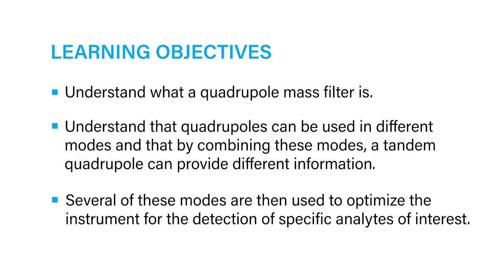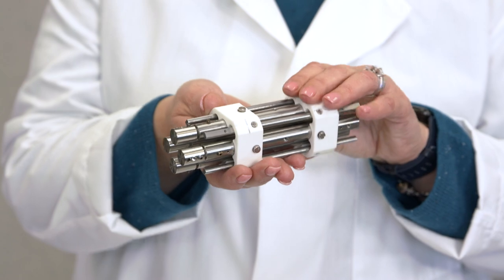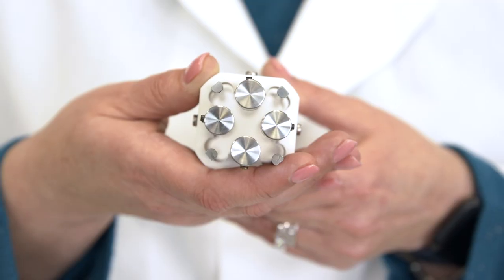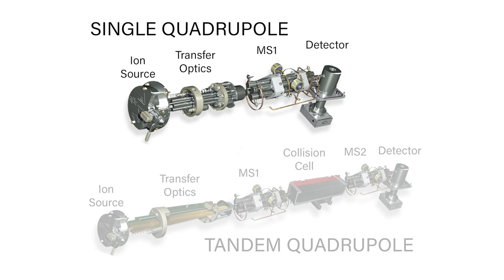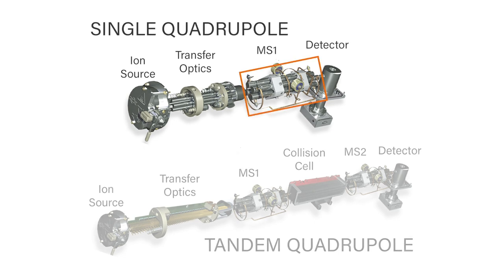A quadrupole is the main element of a quadrupole mass spectrometer. A quadrupole assembly consists of four parallel rods equally spaced around a central axis. Single quadrupole mass spectrometers have one assembly, while tandem quadrupole mass spectrometers have two assemblies, separated by a collision cell.